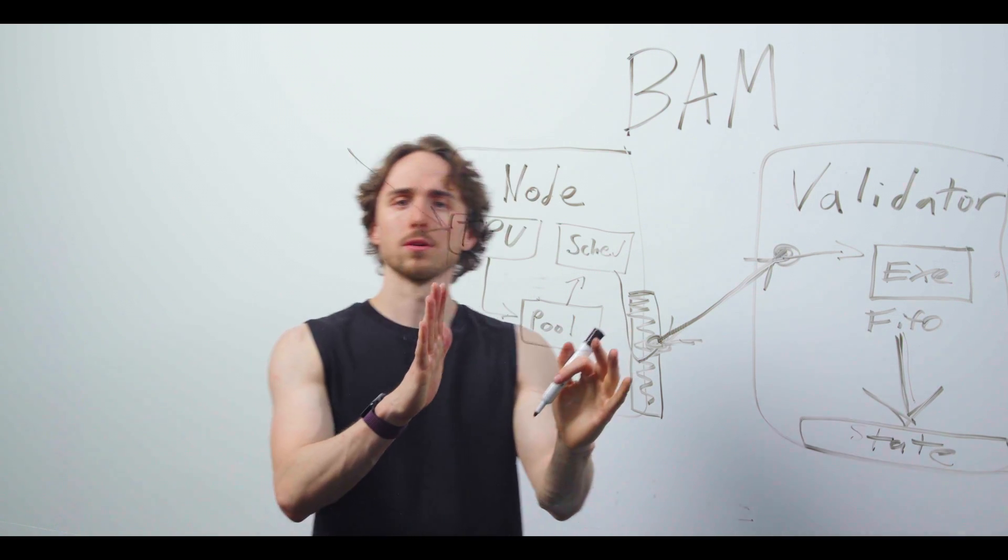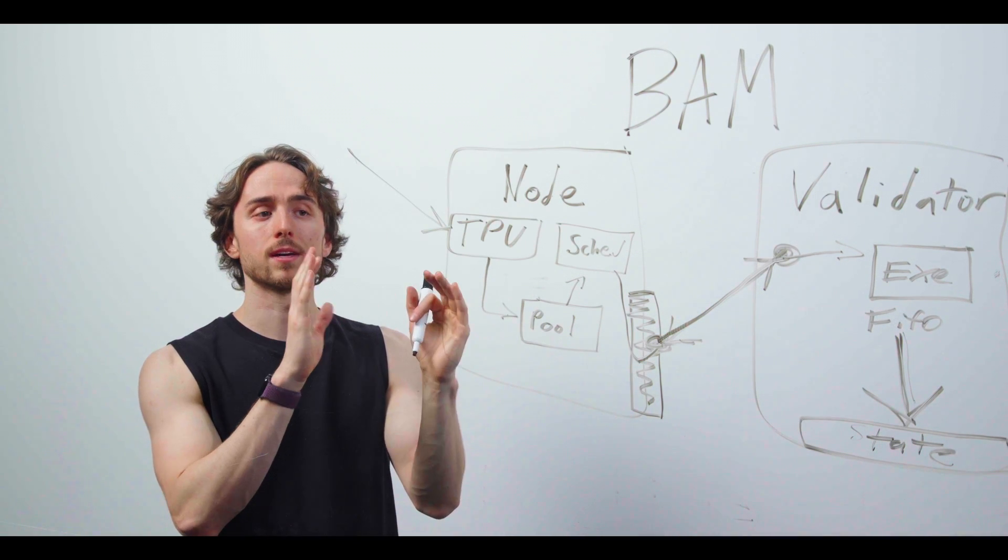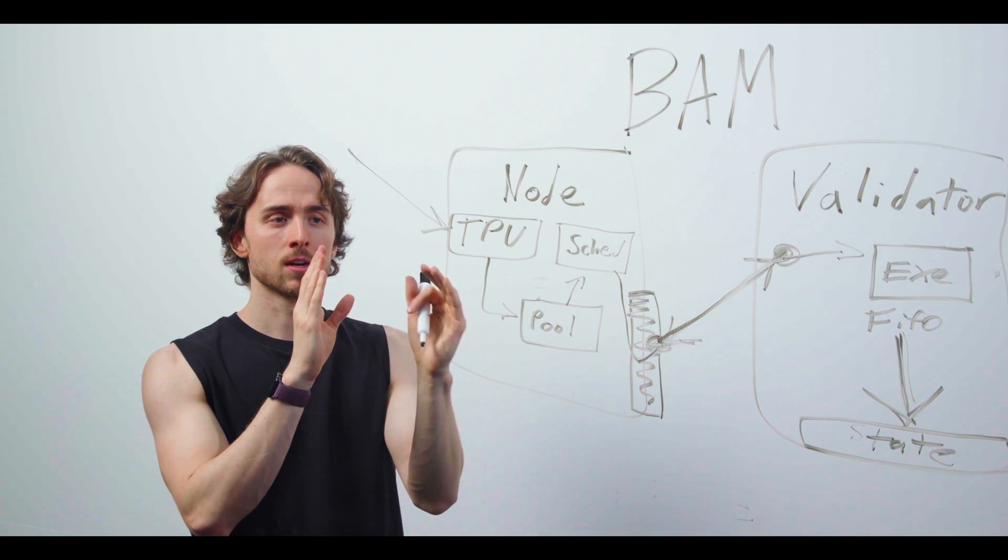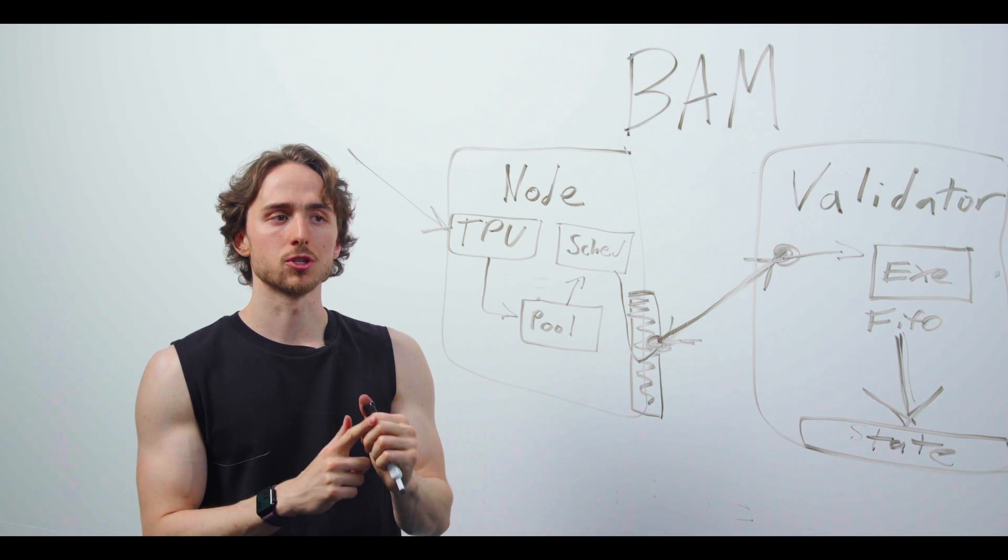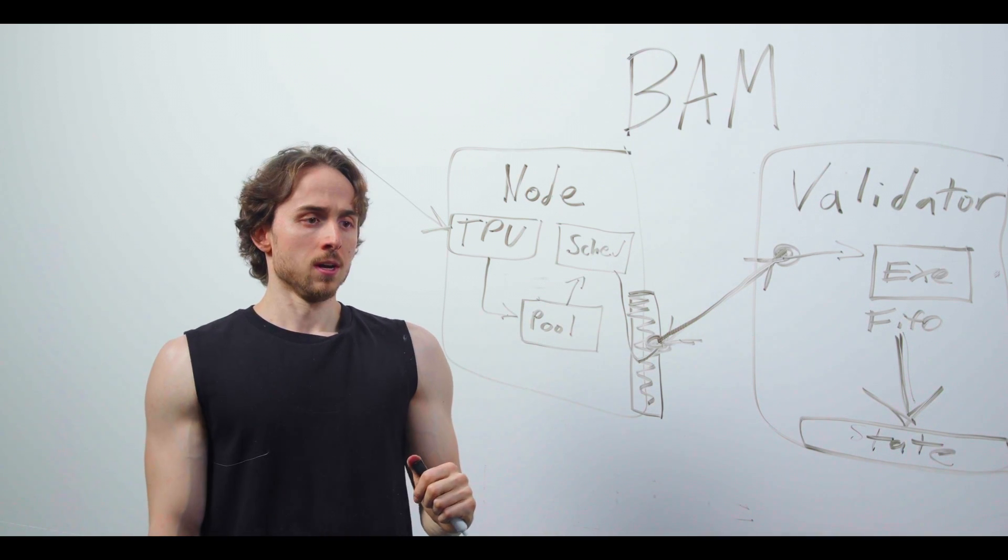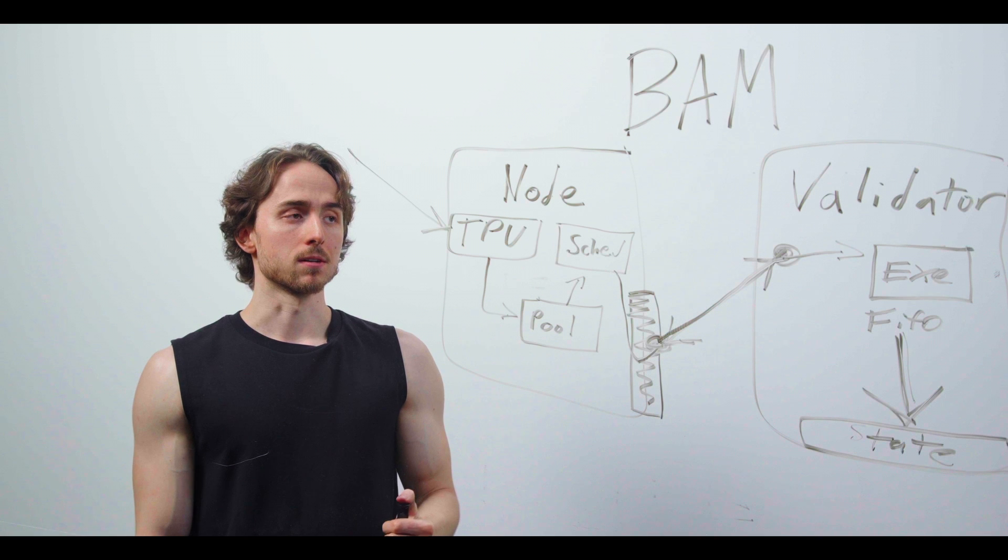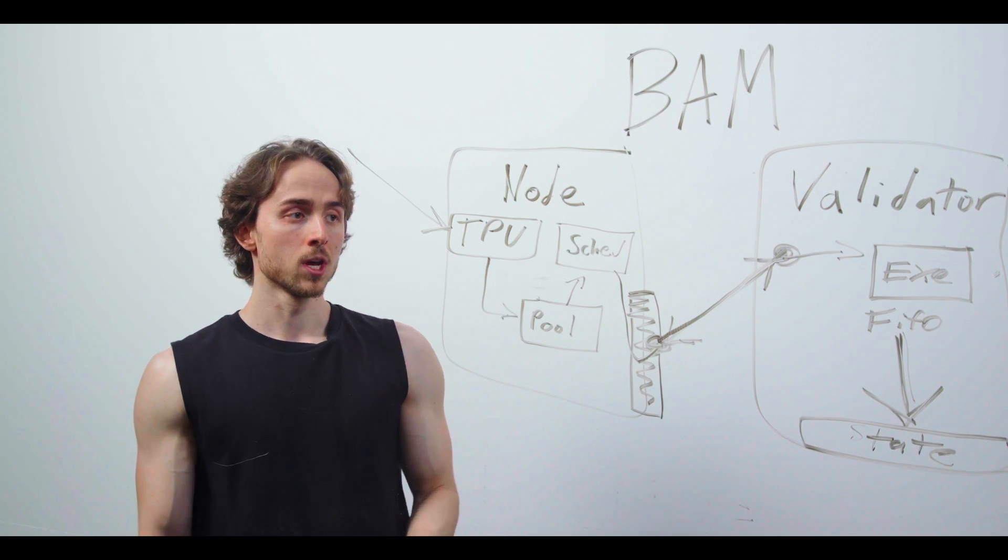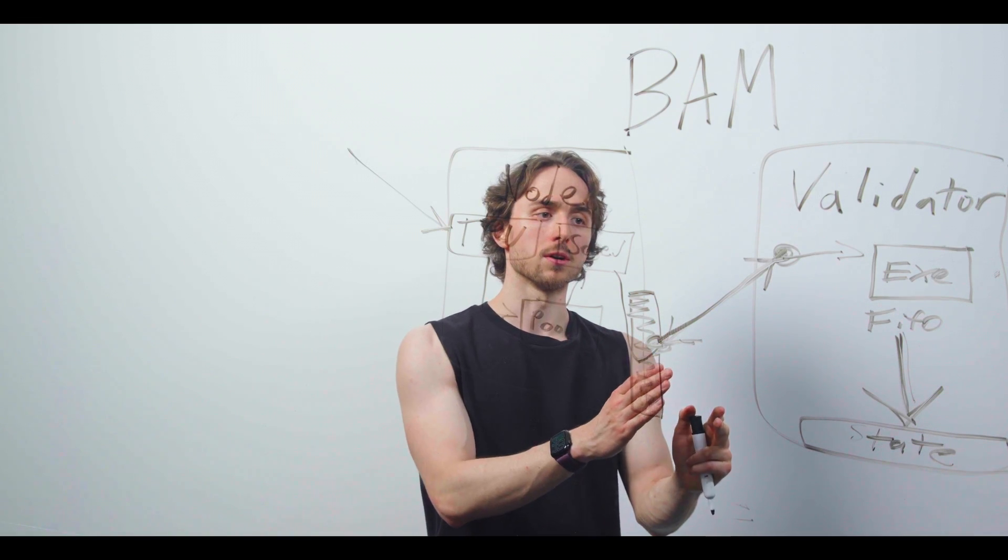Everything in the node is optimized to maximize throughput, reduce latency, and do a lot of important checks and validations that now the validator won't have to do, effectively making the validator a slightly less heavy component in the system. The validator can focus on speed of consensus execution and final state broadcast.